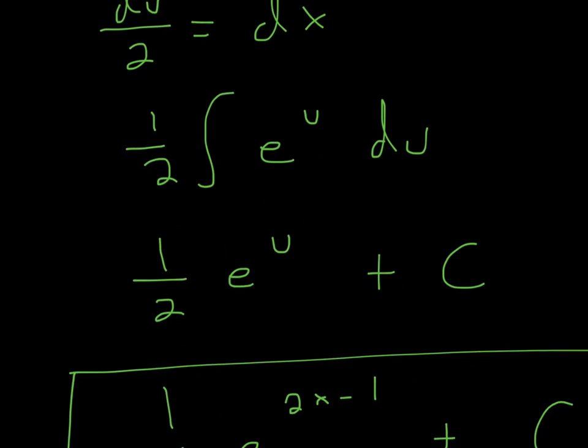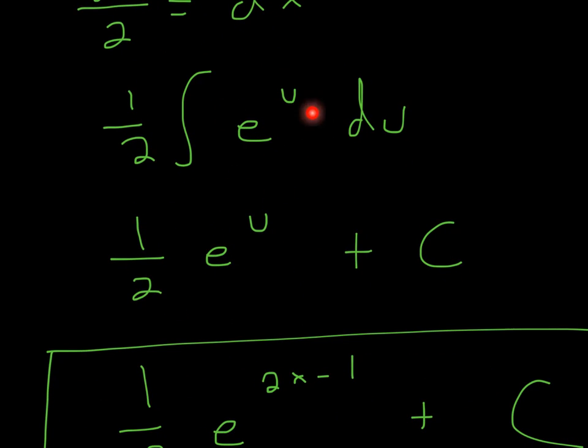So now we can actually take the integral. So the integral of e^u is just e^u. That's just something you have to memorize. And then the 1 half comes down, and it's 1 half e^u plus C. But we're not done.